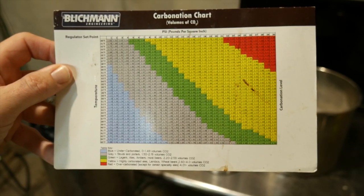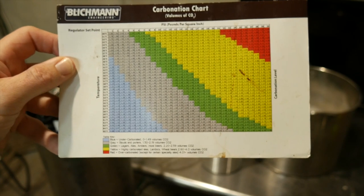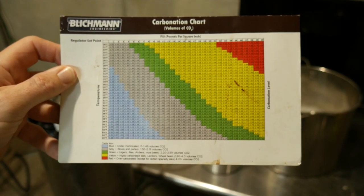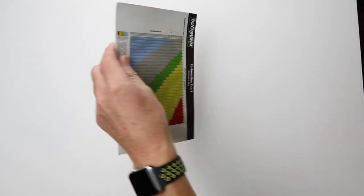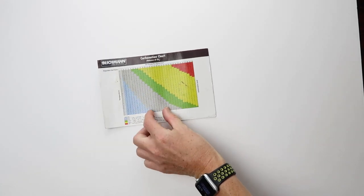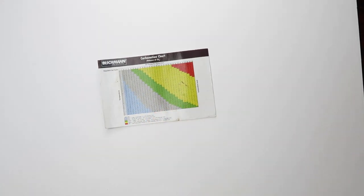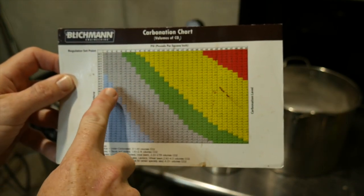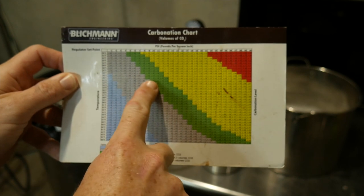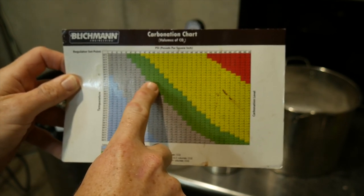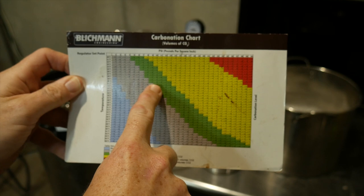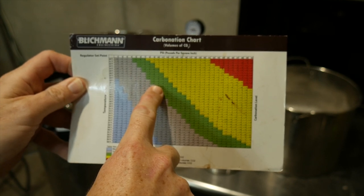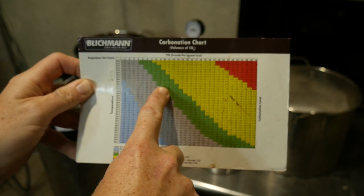Now the system comes with this carbonation chart which shows what PSI to set the CO2 to. You need to know how cold the beer is in the keg. I'm at about 40 degrees, and then you need to pick your style. In this case I'm brewing an IPA, so we're going to be kind of in the green area here. So I'll just look for my temperature, which is 40. And to get around 2.3 volumes of carbonation, I want to set to about 10 PSI.